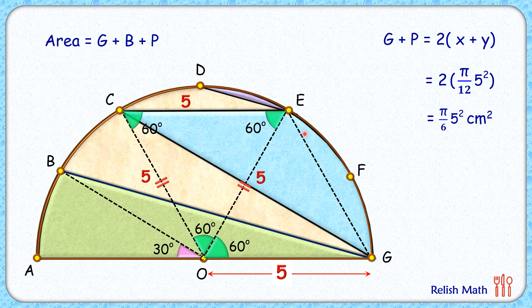Now if we look carefully, CO and EG are two lines in which OE is transverse, and this angle 60 and this angle 60 are alternate interior angles. As alternate interior angles are equal, we can say these two lines are parallel to each other.